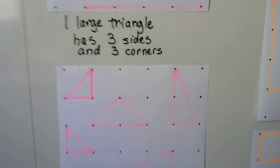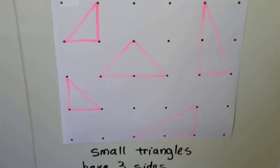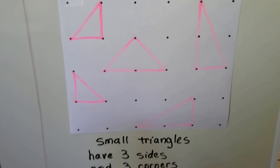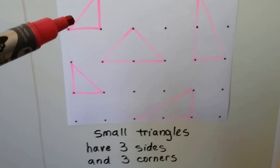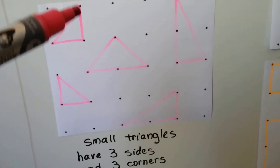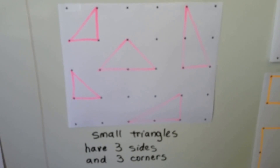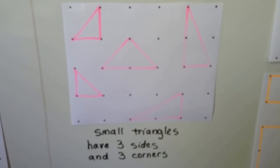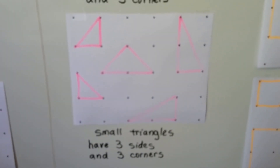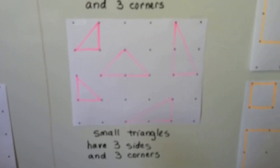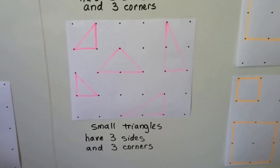I made some smaller ones by connecting different dots. These are all still triangles — they all still have three corners and three sides. So we can make big ones or little ones.